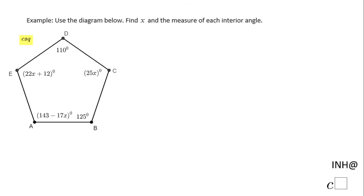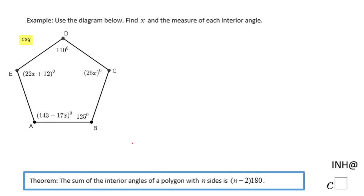For that reason, I'm going to use this theorem which says the sum of the interior angles of a polygon with n sides is (n - 2) times 180. In other words, if we take a look here, we have five sides, a pentagon.